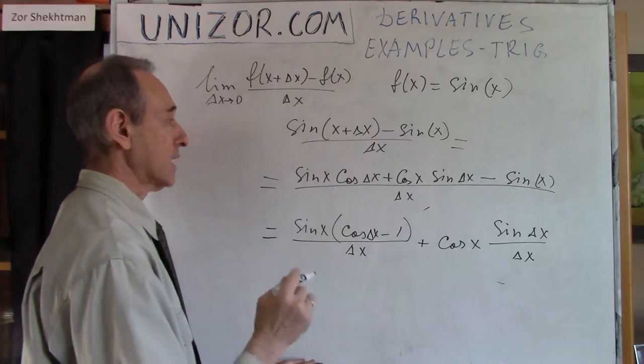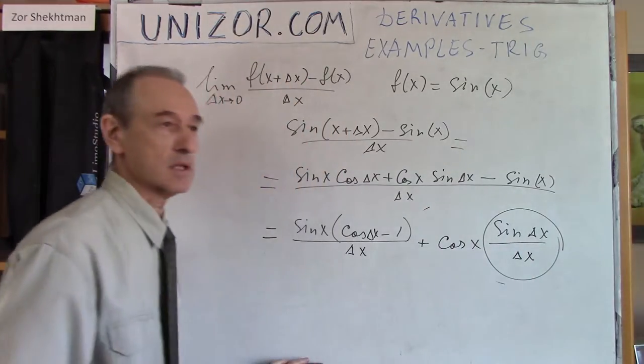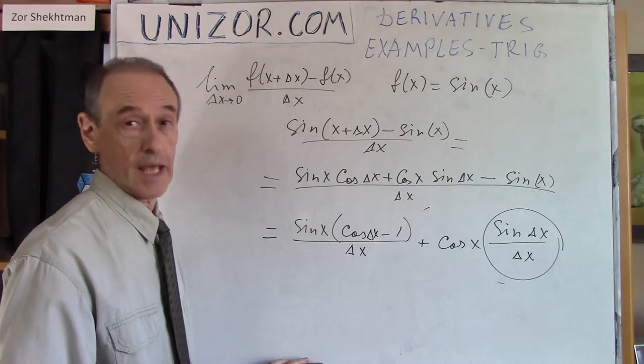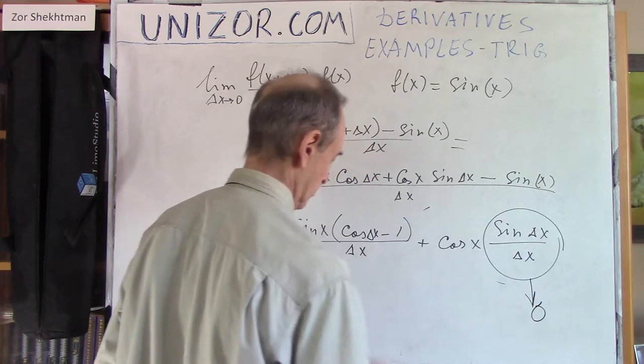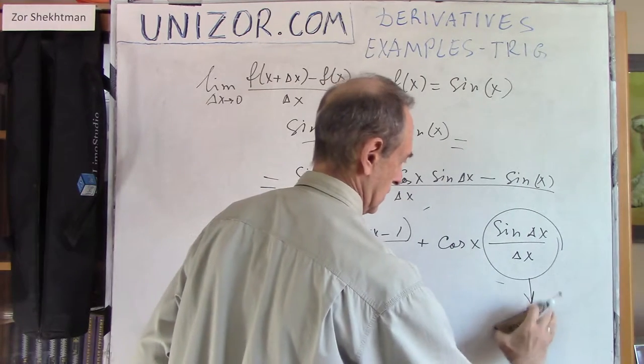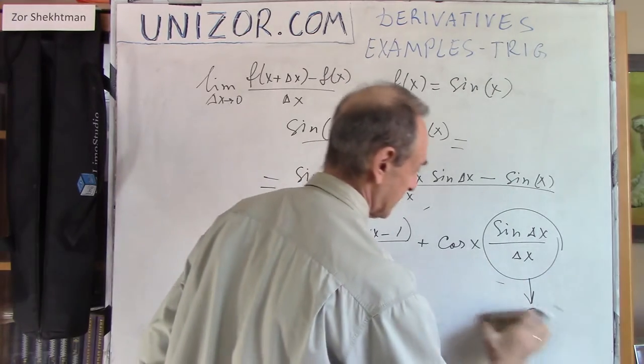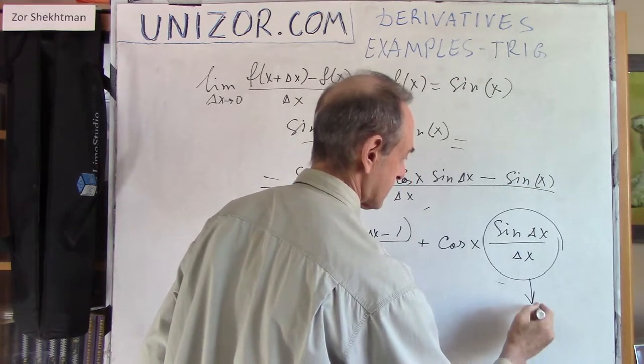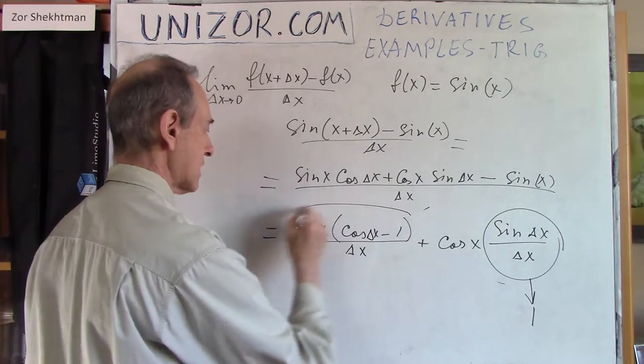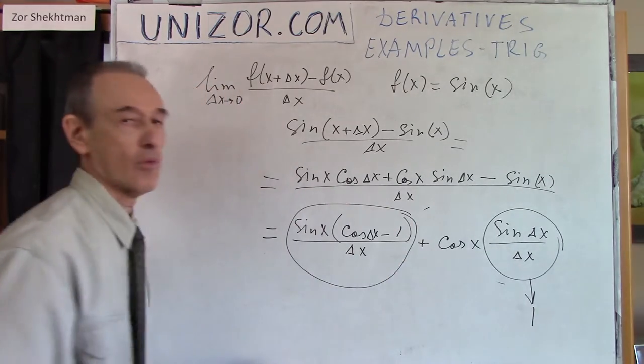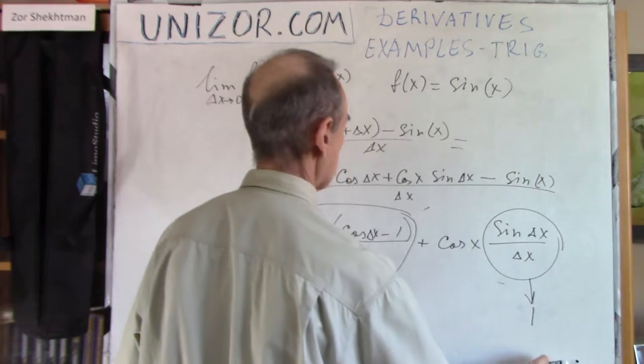Now, as delta x goes to zero, this is one of the amazing limits which we know what happens. This goes to one. This is something a little bit more complex. Let's talk about this separately.